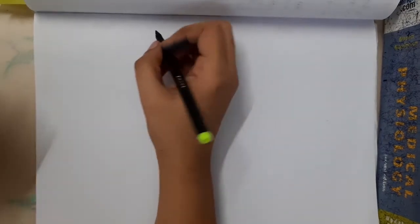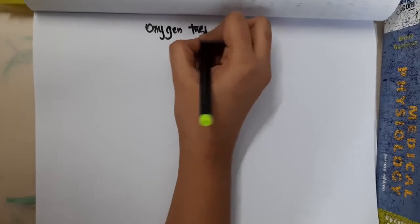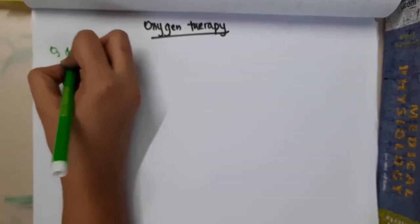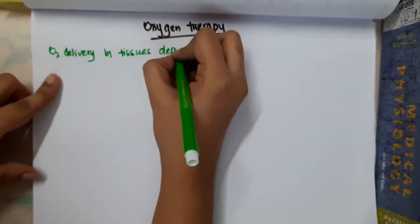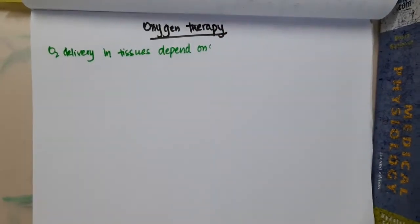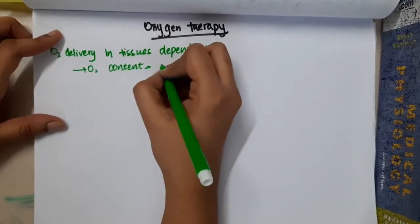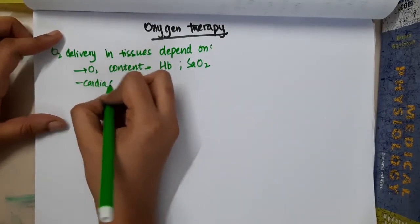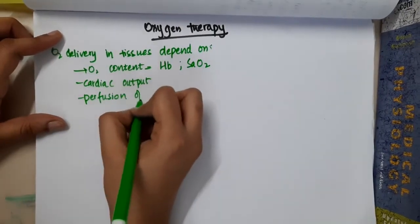Let us learn some important points about oxygen therapy. Oxygen delivery in tissues depends on number one, oxygen content — that is hemoglobin — based on hemoglobin and saturation of oxygen. It also depends on cardiac output and perfusion of the tissues.